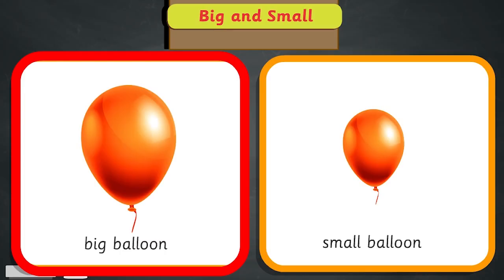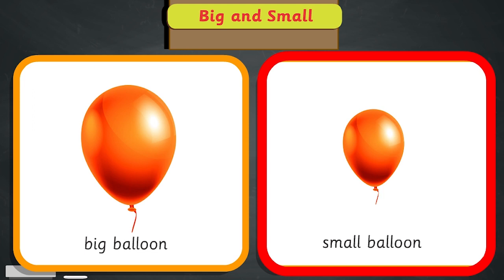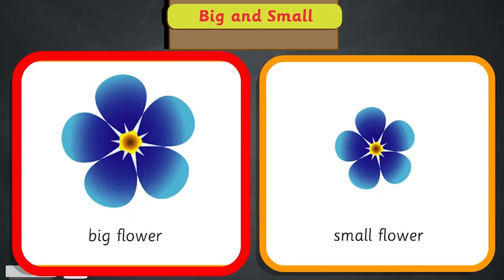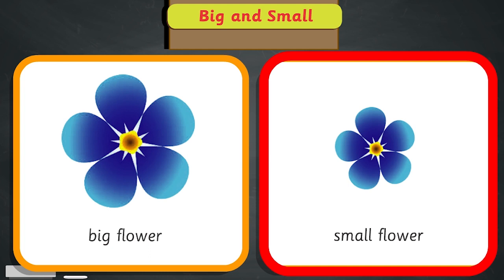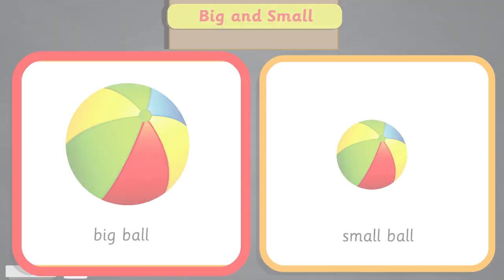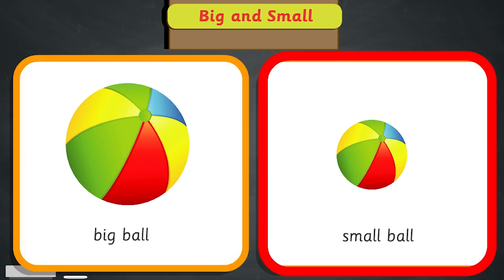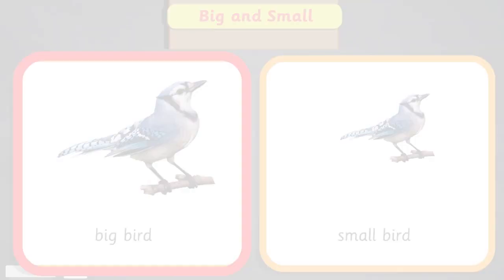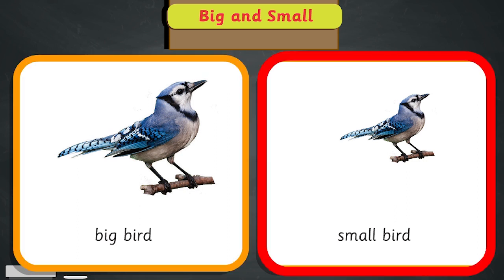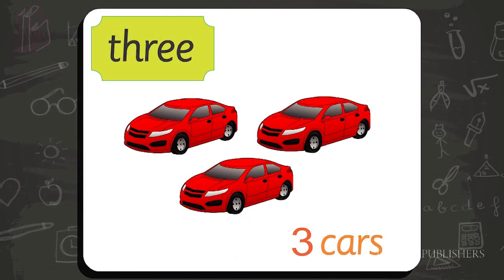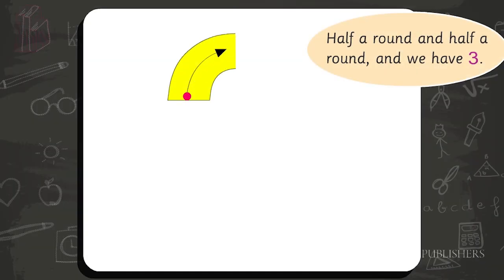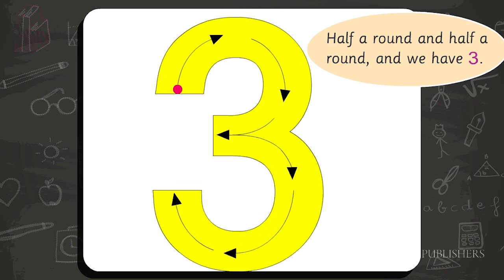Big balloon, small balloon. Big flower, small flower. Big ball, small ball. Big bird, small bird. Three — half a round and half a round, and we have three.